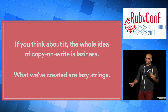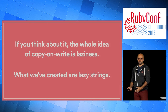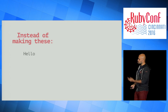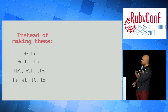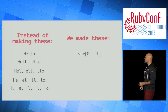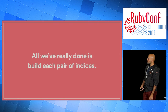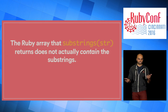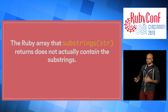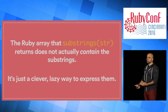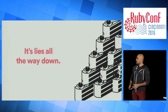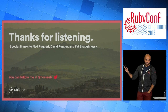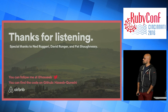What we've created are lazy strings. Instead of making full copies of hell, ell, lo, and all those substrings, we've just reduced the problem to building each pair of indices. The Ruby array returned by substrings — even though calling .class on any element says String — doesn't actually contain the real substrings. It's just a clever, lazy way of expressing them. It's lies all the way down. Thanks for listening. You can follow me on Twitter at Hasib, and the code is on GitHub.